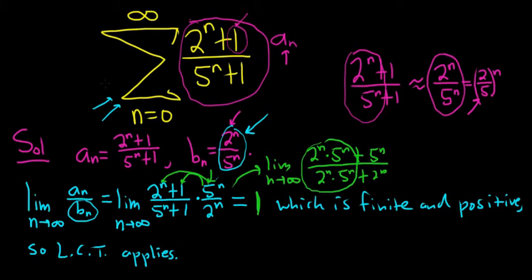So that means that our series and the sum of the b's will either both converge or diverge. So now we have to explain why the sum of the b's converges.